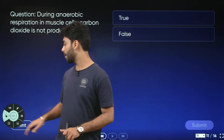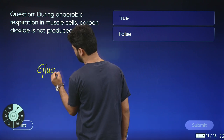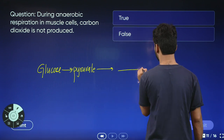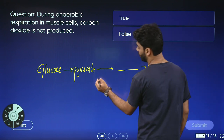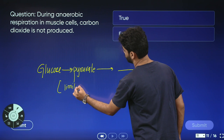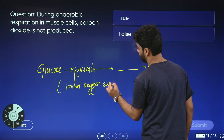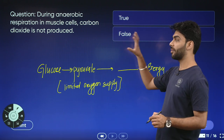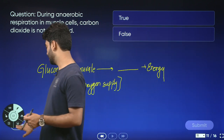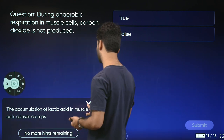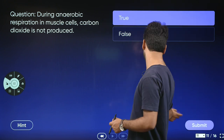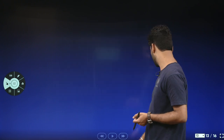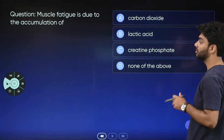During anaerobic respiration in muscle cells, carbon dioxide is not produced. In anaerobic respiration, glucose in muscle cells converts to pyruvate, and pyruvate converts to a product plus energy under limited oxygen supply. If this continues for a very long time it can result in a muscle cramp. The hint confirms that accumulation of lactic acid causes muscle cramps. So the statement is true — carbon dioxide is not produced; instead, lactic acid is produced, and its accumulation in muscle cells causes cramps.